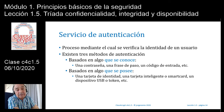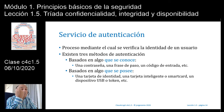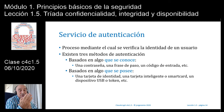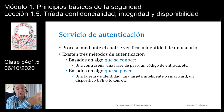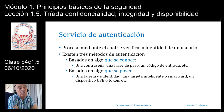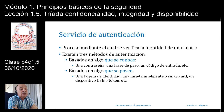Otro método de autenticación está basado en algo que se posee. Yo tengo una tarjeta de identidad; cuando entro a un laboratorio, tomo mi tarjeta —que estará personalizada para mí—, la introduzco y la puerta se abre. O una tarjeta inteligente, un smart card: yo tengo que hacer una transferencia bancaria y me dicen que debo introducir una posición de la tarjeta. O bien un dispositivo USB o del tipo token, donde introduzco ese dispositivo USB y solamente en esos casos puedo entrar.